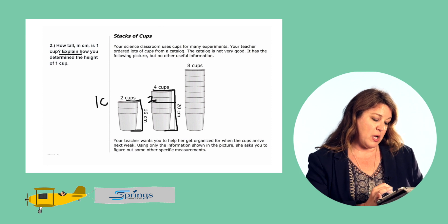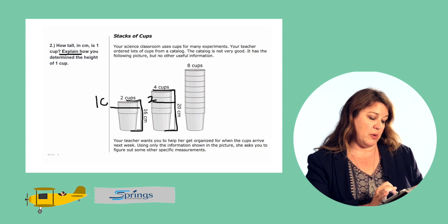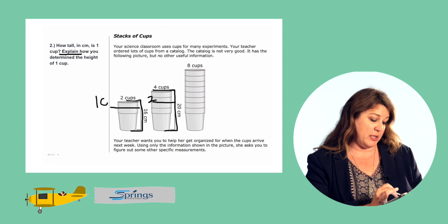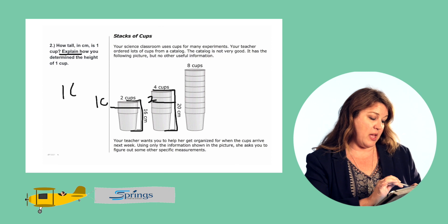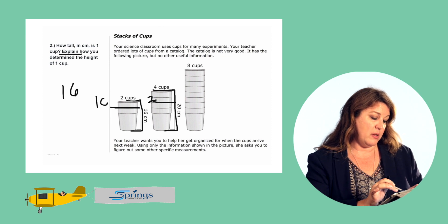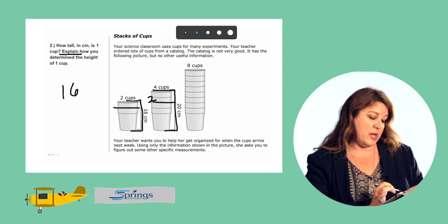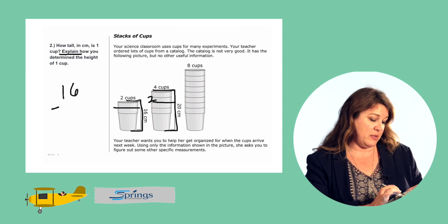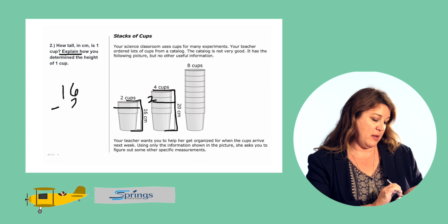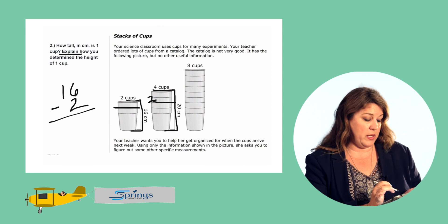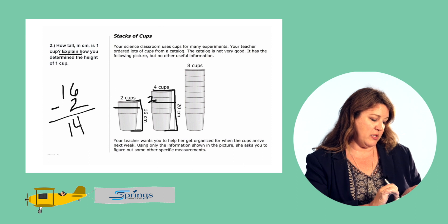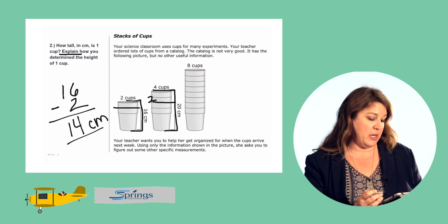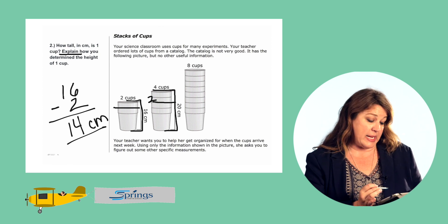If the height of two cups is equal to 16 and we were to eliminate one cup we're really just subtracting two. So if we have 16 centimeters is the height of two cups, we're going to subtract two centimeters and that will tell us the height of one cup. 16 minus 2 is 14. So the height of one cup is equal to 14 centimeters and that's how we explain it.